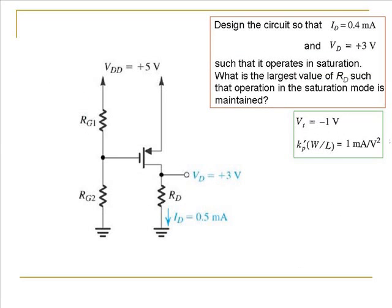Let's try solving a slightly different kind of problem. Here, instead of an N-MOSFET, we have a P-MOSFET. Notice that for a P-MOSFET the threshold voltage is negative, and the gate voltage needs to be lower than the threshold voltage for a channel to be induced. You can look up the equations for a P-MOSFET in your textbook. In this problem, we have to design the circuit such that the values of the drain current and the drain voltage are as specified.